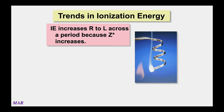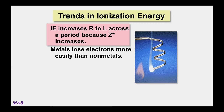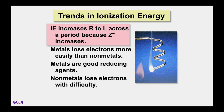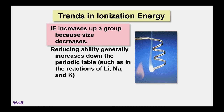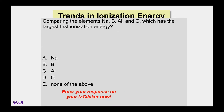Metals generally lose electrons easily — more easily than non-metals — because non-metals in the upper right have higher ionization energies. Metals are good reducing agents: they like to be oxidized, i.e., lose electrons. Non-metals can lose electrons but it's more difficult. Ionization energies increase up a group, so going up and to the right makes it harder to remove electrons because they sit closer to the nucleus.